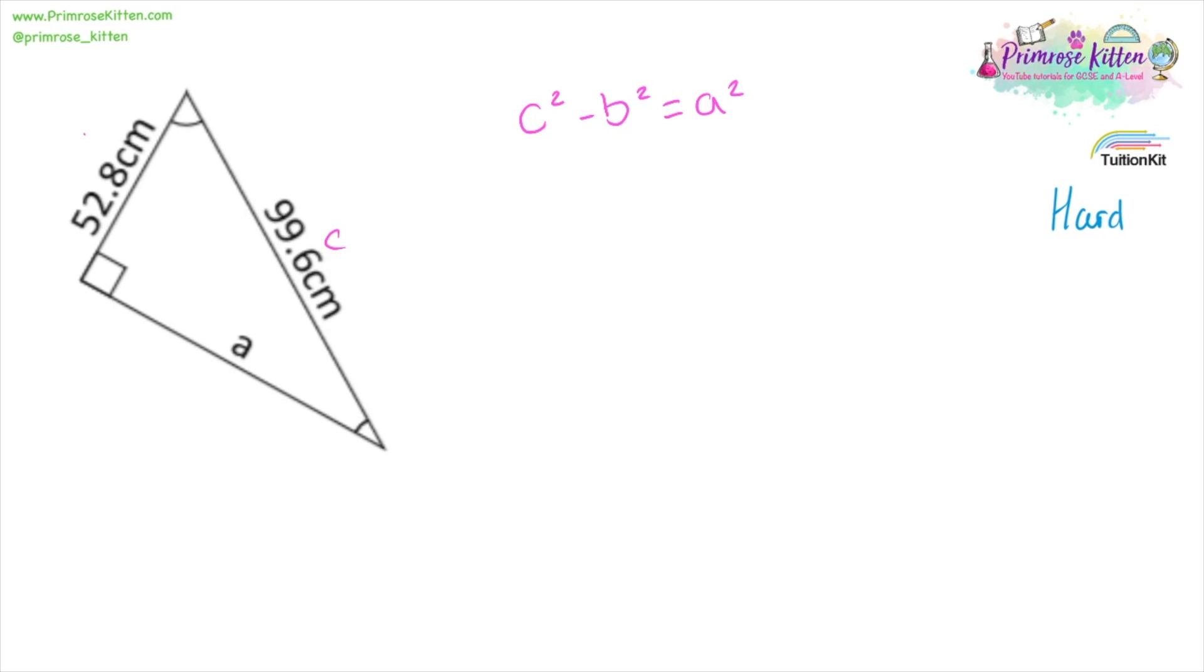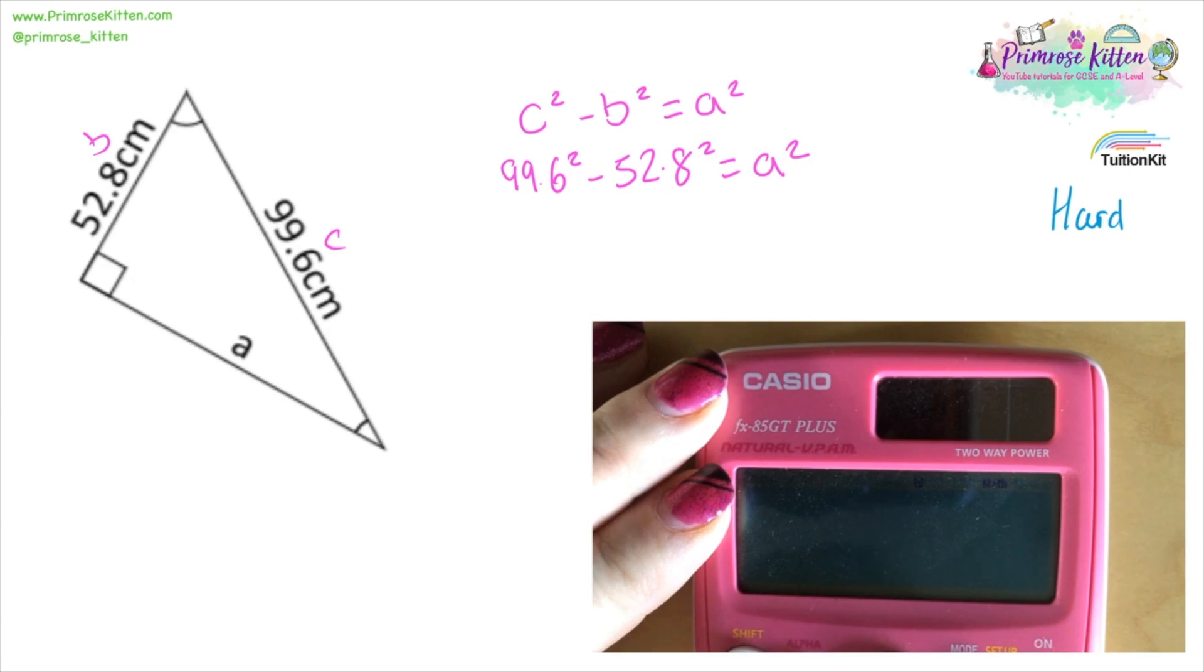C squared minus B squared equals A squared. So 99.6 squared minus 52.8 squared equals A squared. Straight into your calculator, 7132.32 equals A squared. Square root of that is 84.5.